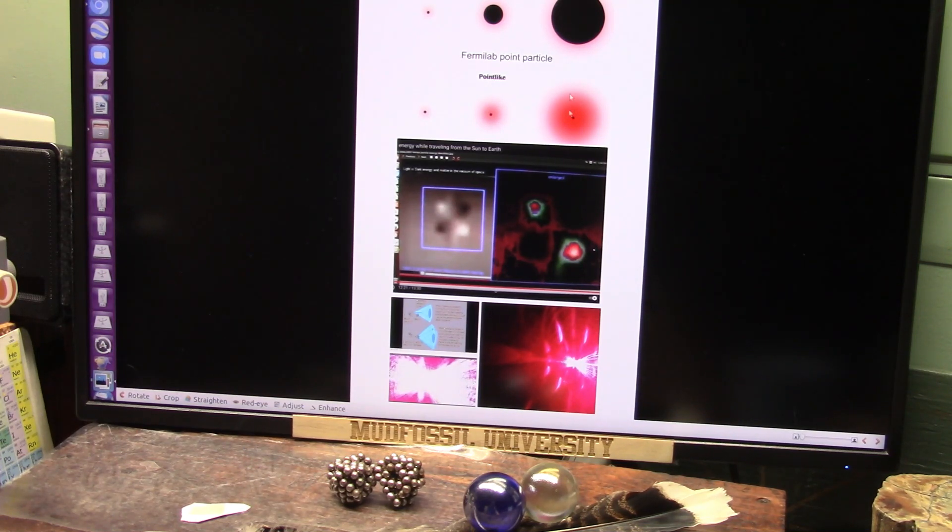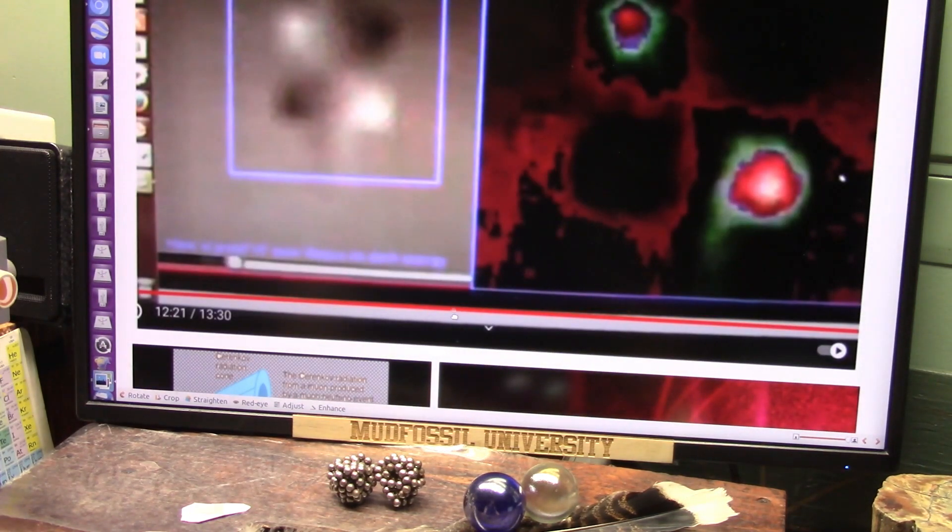But they're the same particle. So this is light. That's what they're looking for. They call this a muon. They call this an electron neutrino, and here they are right here.